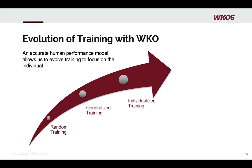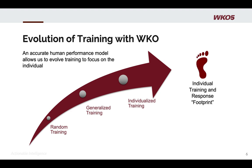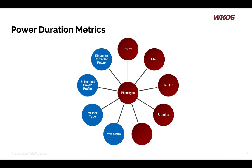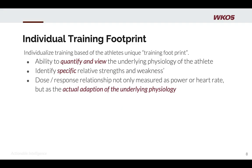Why did we do all that? It's part of the evolution of training with WKO. We really wanted an accurate human performance model so we could evolve training from random to generalized. We've been stuck in generalized training — using generalized training zones and generalized information. WKO4 really began the movement towards individualized training, and WKO5 continues to enhance it by helping you establish your individual training and response footprint — training determined by your unique physiology, your physiological needs, and where you want to go. That's why we take this 360-degree view, producing all these model-based metrics.